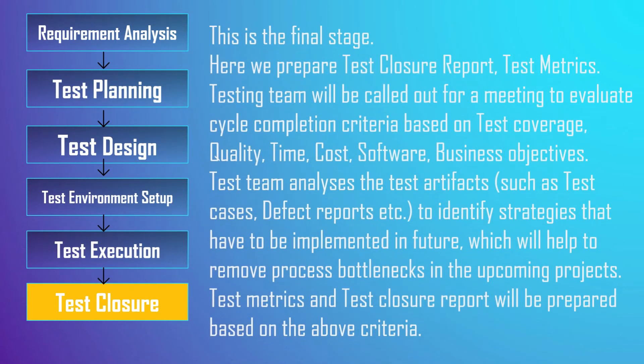The last phase is Test Closure, the final stage where the team prepares a test closure report and test metrics. The team evaluates based on cycle completion criteria covering code coverage, quality, time, costs, software, and business objectives. The test team analyzes test artifacts such as test cases and defect reports to identify strategies to be implemented in future projects that will help remove process bottlenecks. The test metrics and test closure report are prepared based on the above criteria.